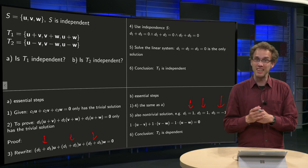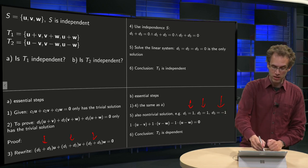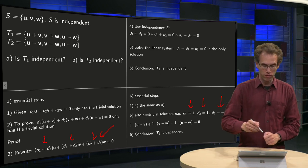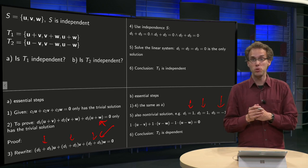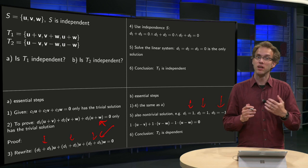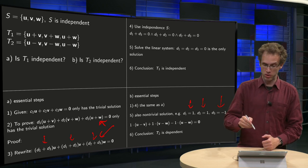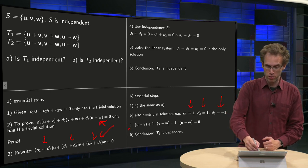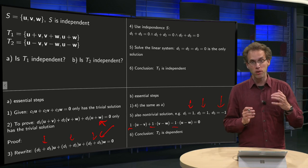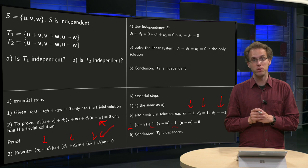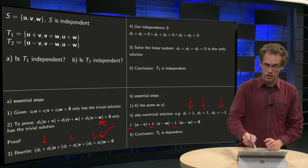So that means that in this case you also find that non-trivial solution over here, which means that in this case t2 is in fact dependent. You can see a dependence relation, and you can check it of course by plugging in the one, the one and the minus one and you see indeed this equation holds. So now you can conclude that indeed t2 is dependent.